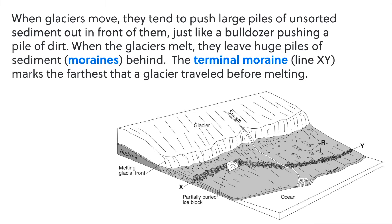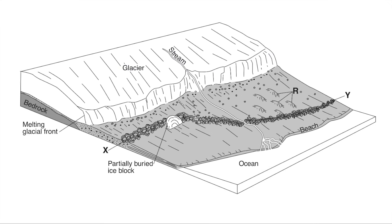Moraines reveal a lot about a glacier. Particularly the terminal moraine, shown in this diagram as line XY — this marks the farthest point that a glacier traveled before it receded or melted away.